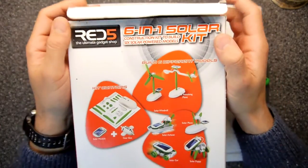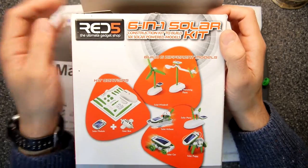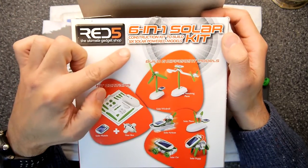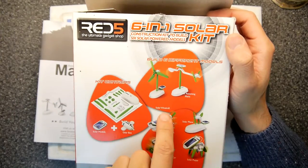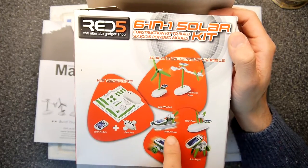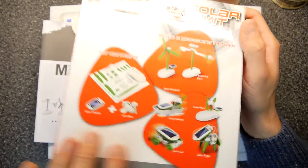So this is a RED5 5-in-1 solar kit, construction kit to build six solar powered models and all the bits you need - solar windmill, solar revolving plane, solar airboat, solar plane, solar car, solar puppy, a whole load of stuff.